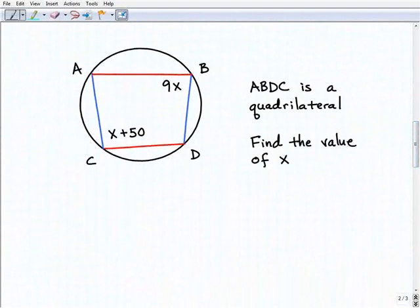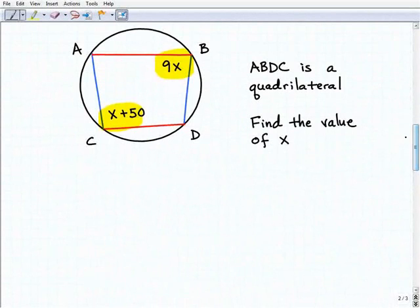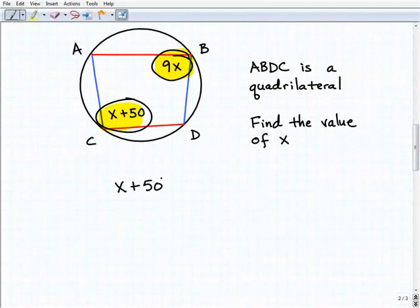Here we have a quadrilateral, a four-sided figure, and each one of these angles is an inscribed angle. We had a theorem that talked about the opposite angles. What was that theorem? It said opposite angles are supplementary. So this angle here and this angle here are opposite angles. If we add those two angles up, they're going to equal 180 degrees. So I can write an equation saying I have an angle here, x plus 50. If I add that to this other angle, 9x, these are opposite angles in this inscribed quadrilateral, I know I'm going to get 180 degrees.